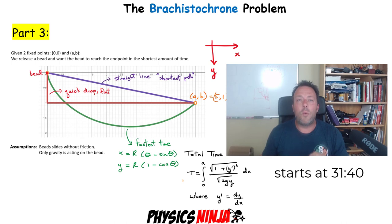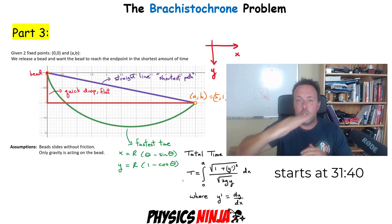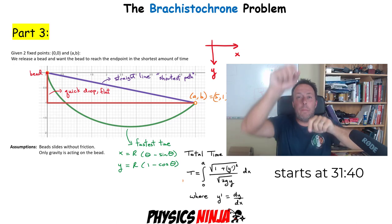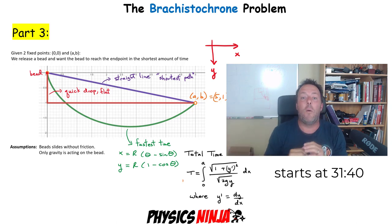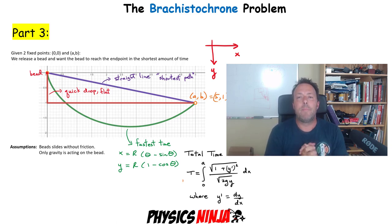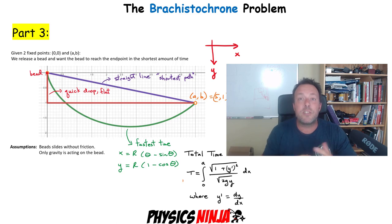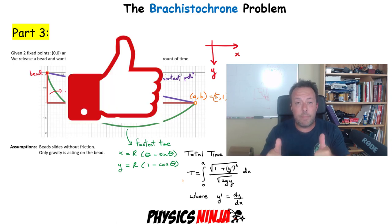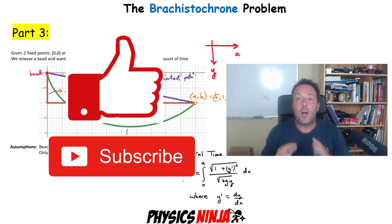In the third part I want to compare the brachistochrone to two other curves. I'm going to consider the shortest path between those two points — a straight line — and another curve where there's a sharp drop so the bead speeds up but then has a longer horizontal distance to travel. We're actually going to use our expression for time to calculate the time for these three curves. At the end you'll see that the brachistochrone solution is the fastest. This video involves quite a lot of math, so if you don't want to watch the whole thing, just skip to the part you're interested in — the times are written in this introduction. Like with all my videos, if you like it give it a thumbs up and consider subscribing.